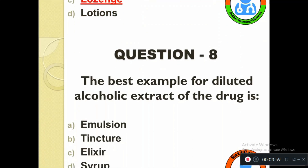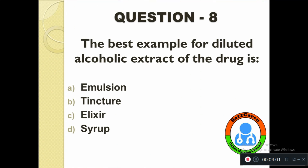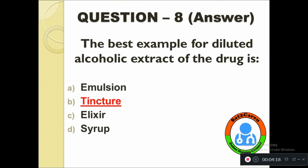Question number eight: The best example for a diluted alcoholic extract of drugs is — option A: Emulsion, B: Tincture, C: Elixir, D: Syrup. The right answer is Tincture.